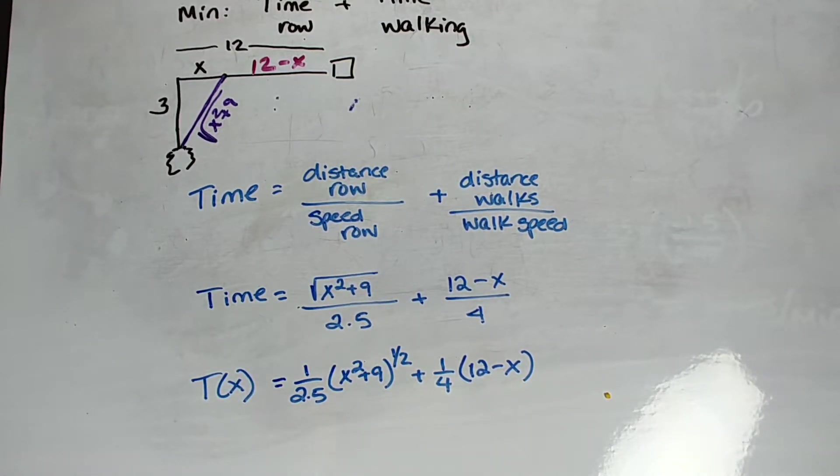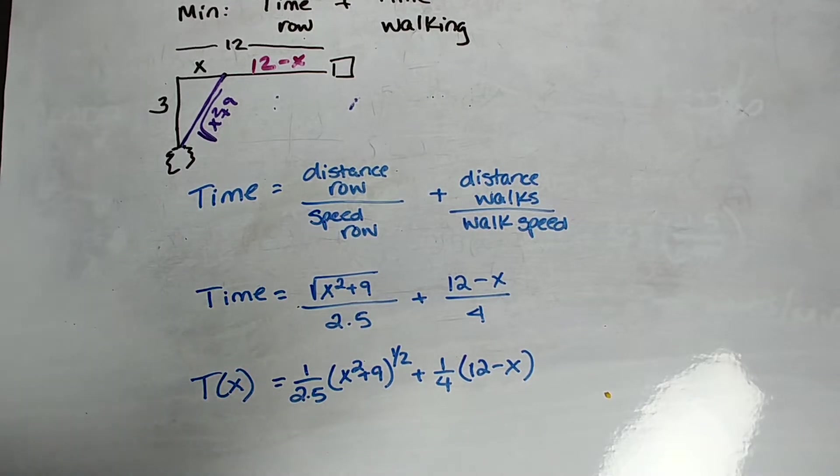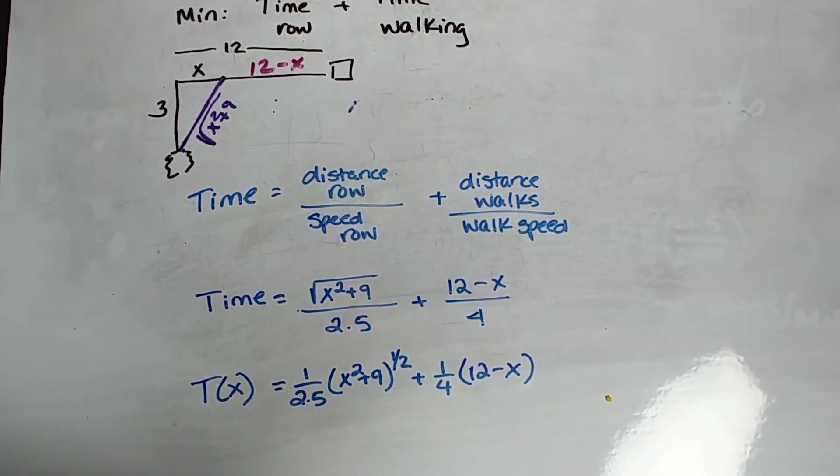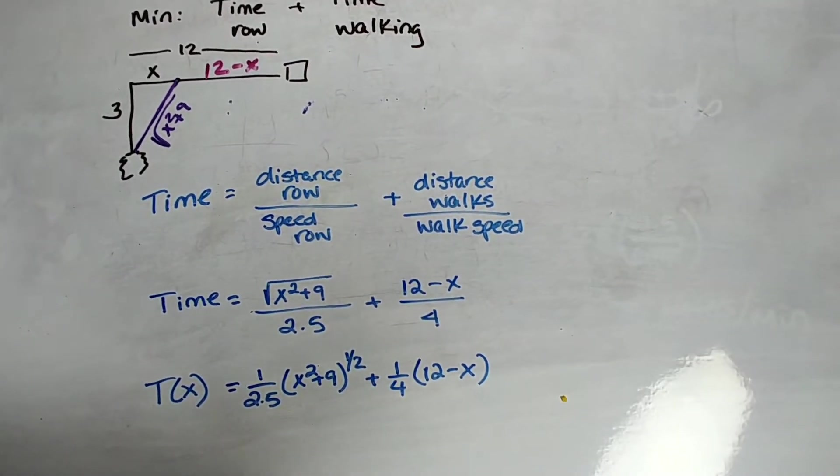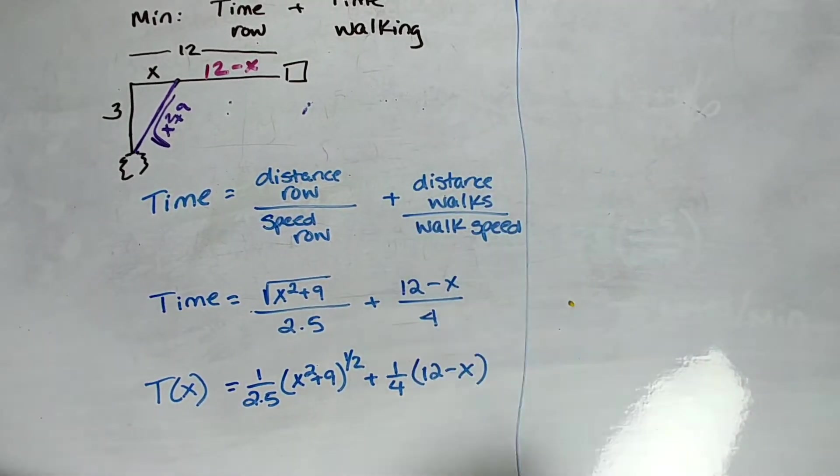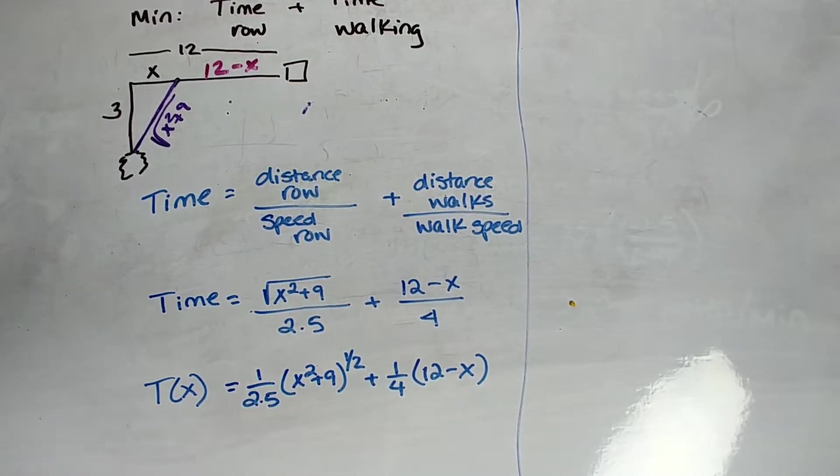So let's move this down again. And let's just call this 1 over 2.5. And let's change, remember we always change square roots to powers of 1 half, plus 1 fourth, 12 minus X. So this is going to be our T of X. Okay, so that's our T of X. And we have to derive that thing. But that's okay. It's actually not as bad as it looks, especially if we take those denominators and we get rid of them.